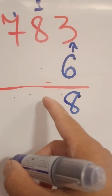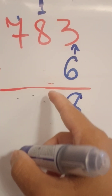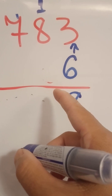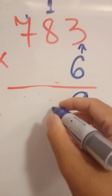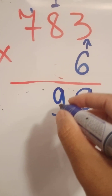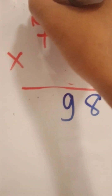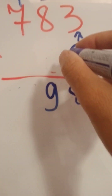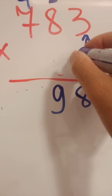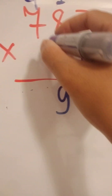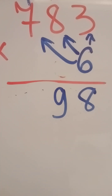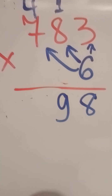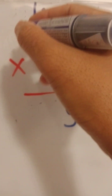Six and three is 18 — write 8, keep one. 48 plus one is 49 — keep four. Six and seven is 42, then 42 plus four is 46.